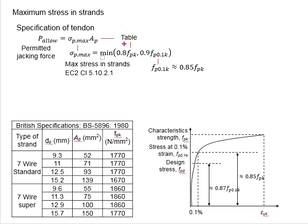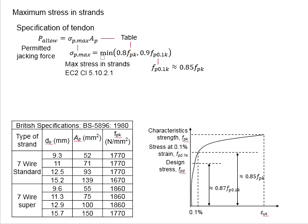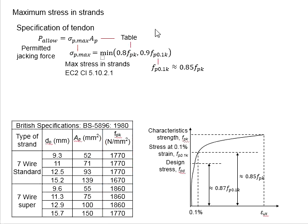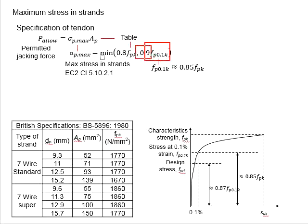Normally, the manufacturer provides FPK and FP0.1K. You substitute into the equations and determine the maximum allowable stress, then multiply by the cross-sectional area to get the maximum permissible jacking force. In cases where you only have the ultimate capacity, the yield strength is estimated as 0.85 FPK. This FP0.1K is then multiplied by 0.9 to determine the permissible jacking force.